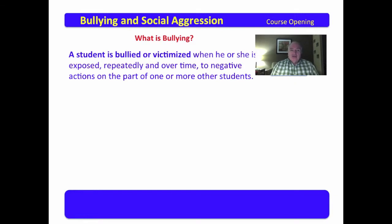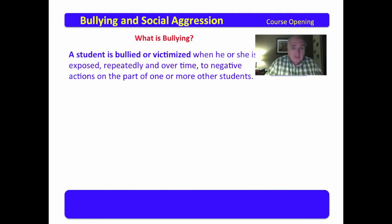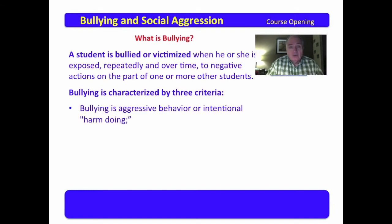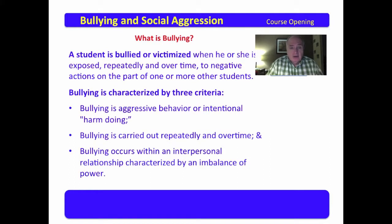What is bullying? A student is bullied or victimized when he or she is exposed repeatedly and over time to negative actions on the part of one or more students. Note that repeatedly and over time. Bullying is characterized by repeated behavior which is carried on over time. Bullying is characterized by three criteria: aggressive behavior or intentional harm-doing, carried out repeatedly and over time, and occurring within an interpersonal relationship characterized by an imbalance of power.